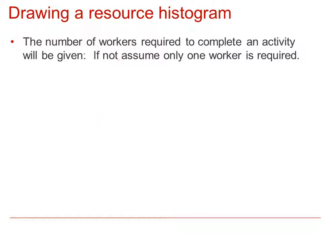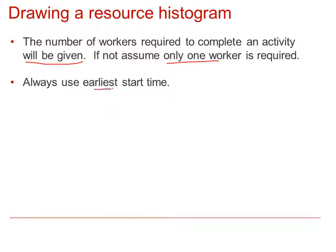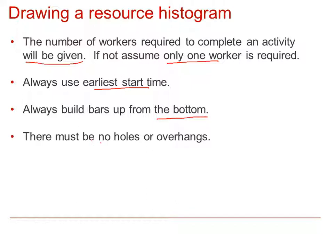To draw a resource histogram we just have to follow a few rules. The number of workers required to complete an activity will be given; if not, assume only one worker. We always use the earliest start times unless otherwise stated. We always build the bars up from the bottom. And there must never be any holes or overhangs, and this will become clear as we go through our example.